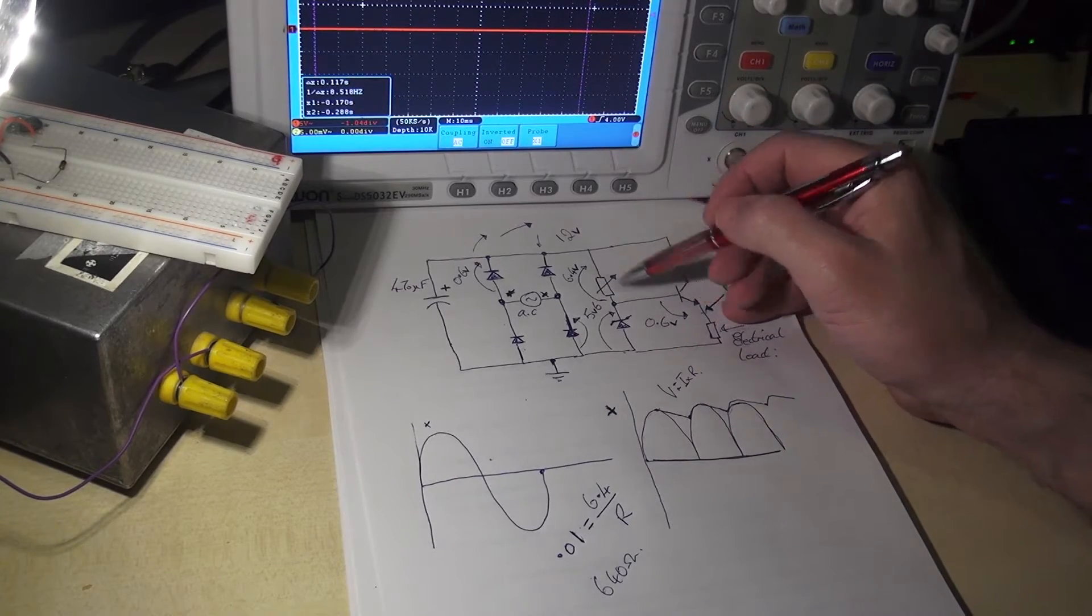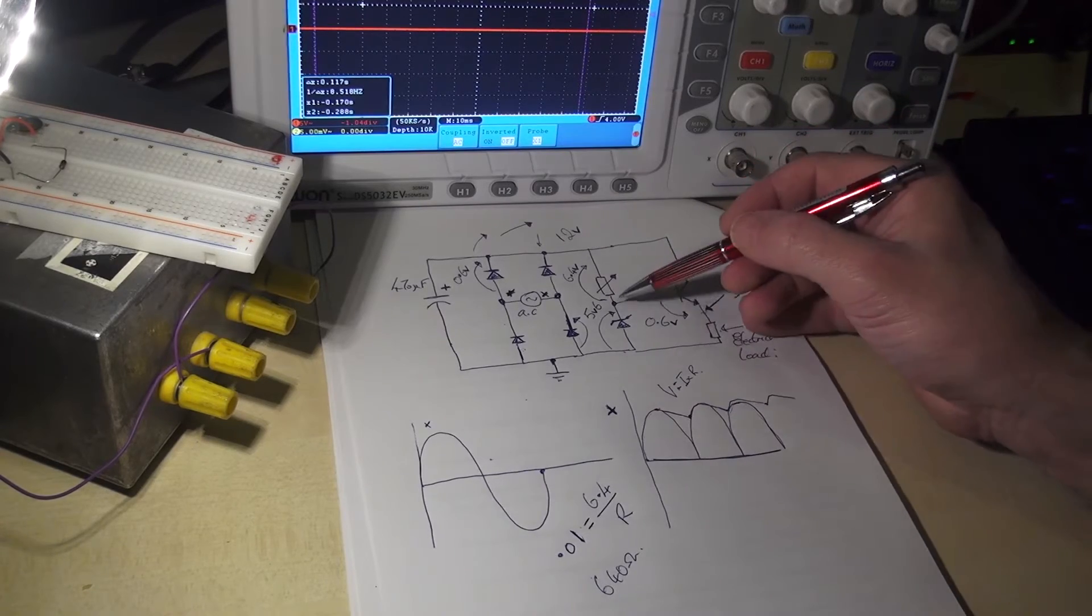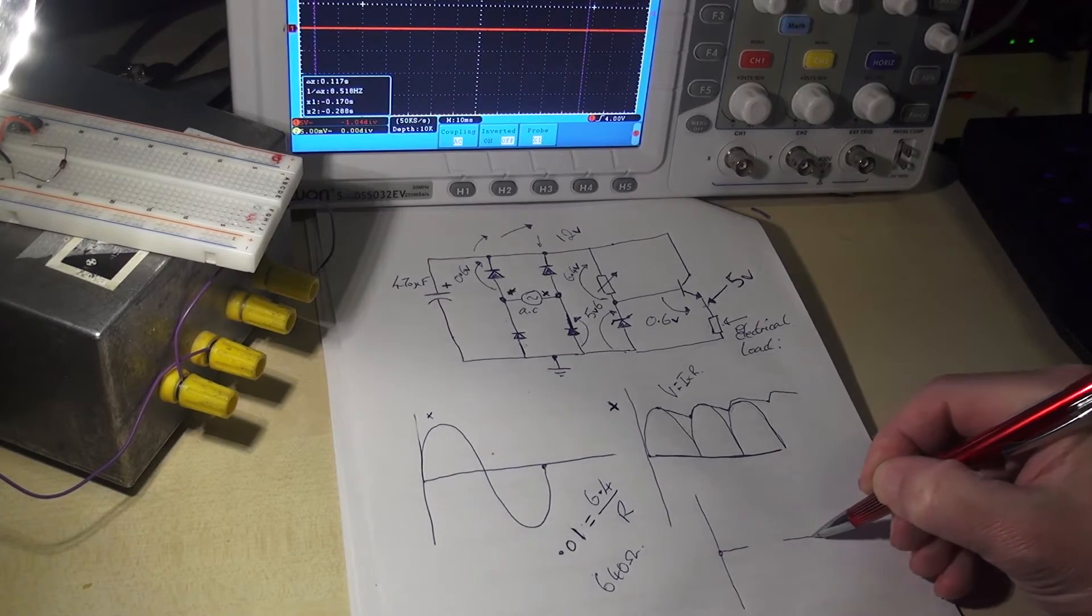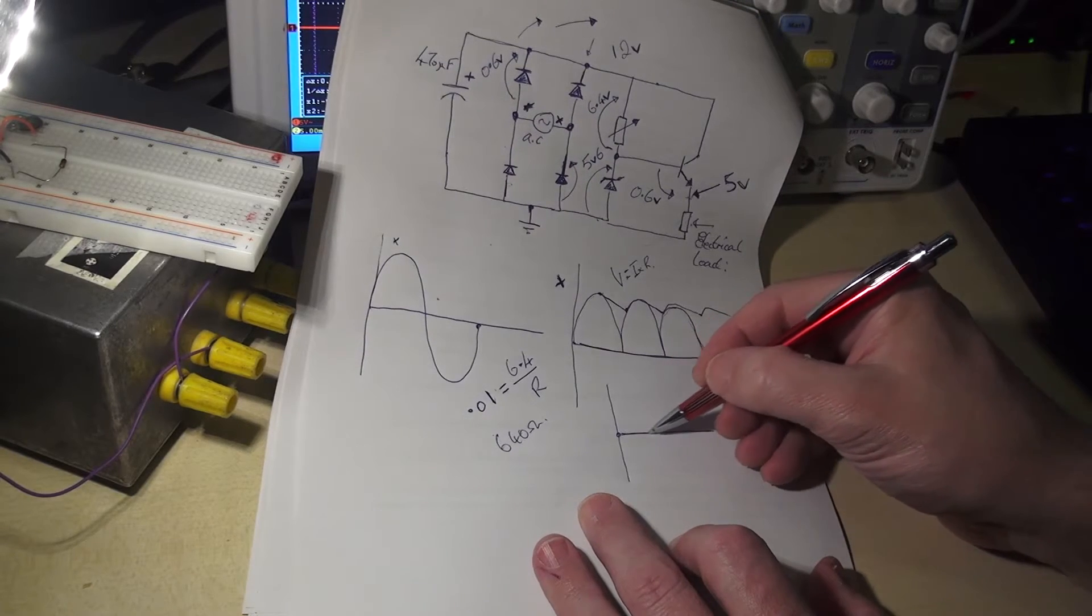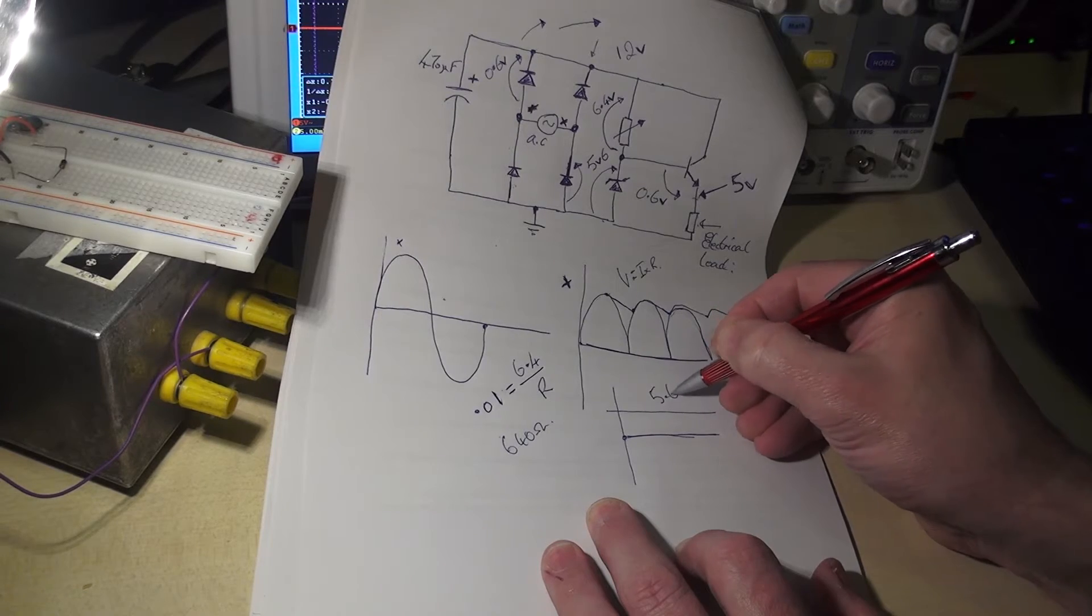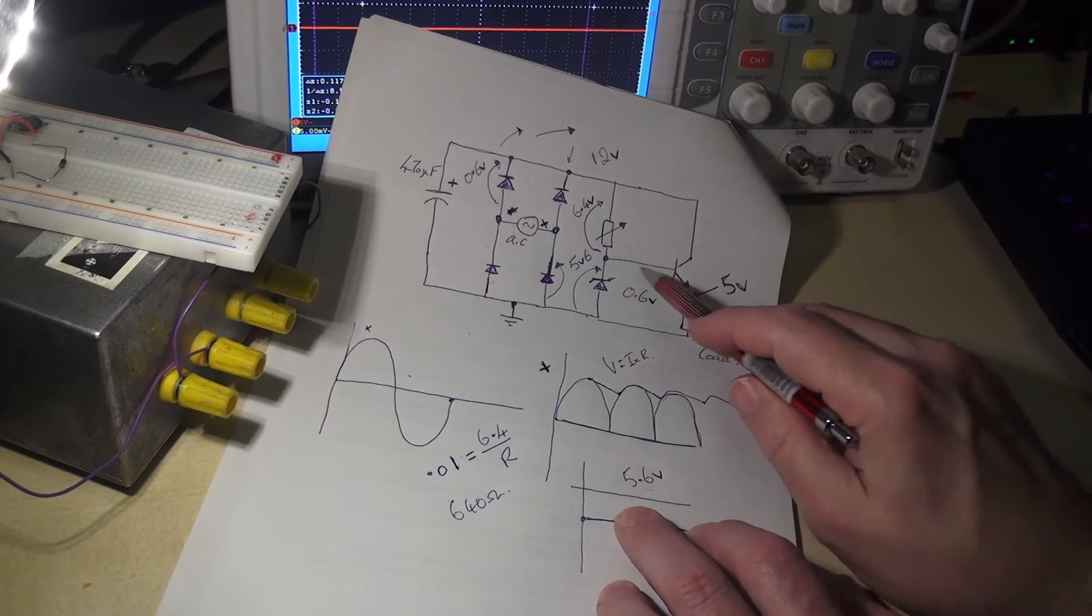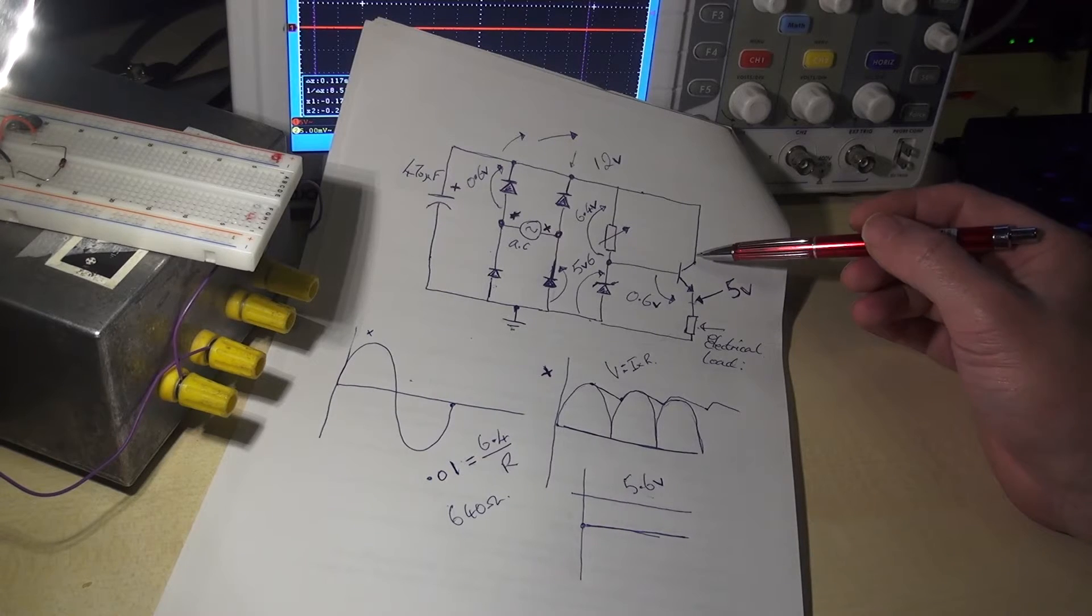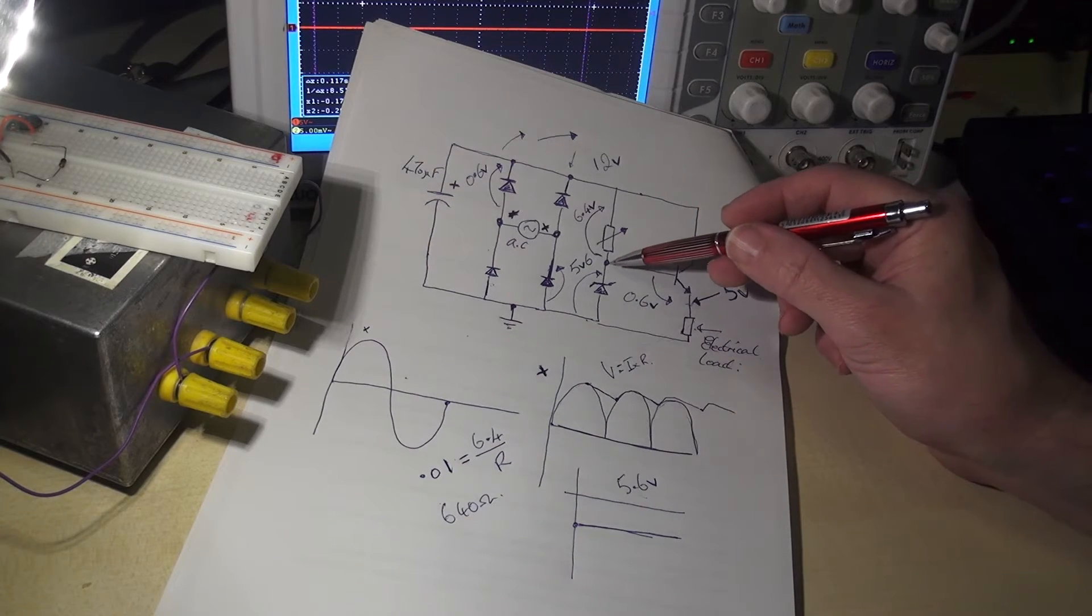Now if you choose this resistor carefully according to that sort of rule of thumb there, what will happen is that the voltage across the Zener will maintain a steady 5.6 volts. And that 5.6 volts is connected to the base of our transistor. The transistor is connected in something called emitter follower configuration. What that means is that the emitter will follow what happens at the base.